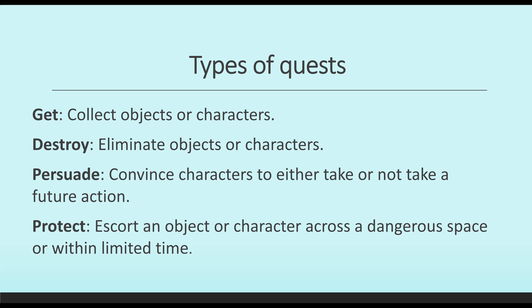These four categories are: get — we collect objects or characters; destroy — we eliminate objects or characters; persuade — we convince characters to either take or not take an action; and protect — we escort an object or character across a dangerous space or within a limited time. Many games combine all of these things, and there might be particular quests where you persuade, destroy, get, and protect all within the same longer quest. Some though are just one or the other — it might be go get a certain number of things, or it might be destroy these other things.